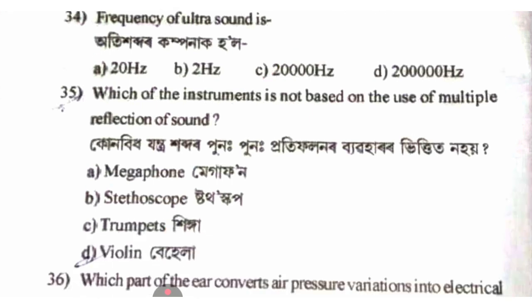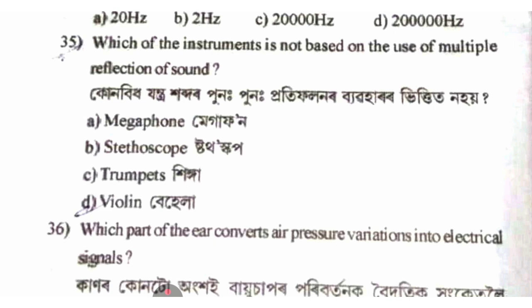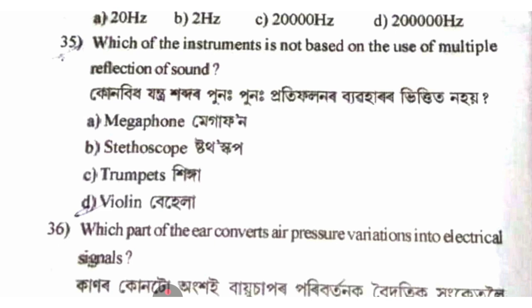Which instrument is not based on the use of multiple reflections of sound? The answer option is D — violin.